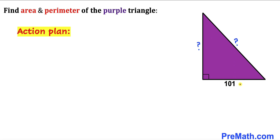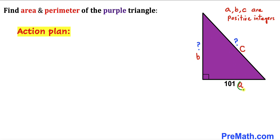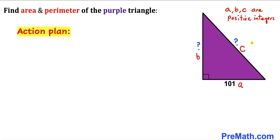Let me go ahead and label these side lengths. I'm going to call the longest leg side c, this side lowercase a, and this lowercase b, where side lengths a, b, and c are positive integers. Our task is to find the values of side lengths b and c.